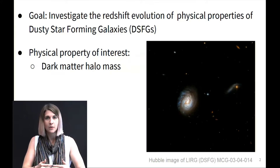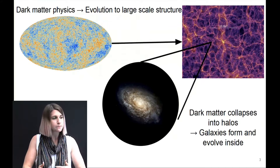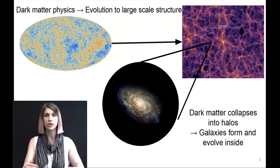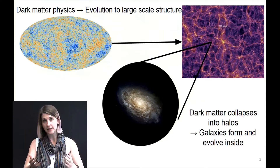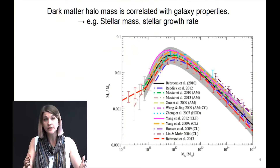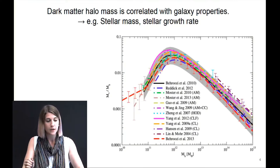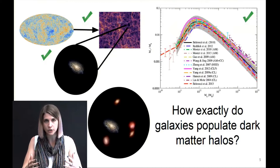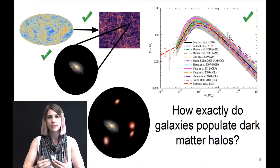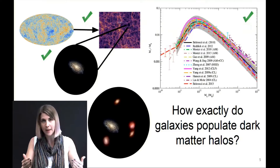Within Lambda CDM, which is a cosmological framework for the universe, dark matter physics is considered to be known. Therefore, the evolution of large-scale structure of the universe is also known for dark matter. In this theory, dark matter collapses into spherical halos inside of which galaxies form. The dark matter halo mass correlates with other physical properties of the galaxies, such as their stellar mass or stellar growth rate. The dark matter physics is known, the correlation with physical properties is known, but one question we still haven't figured out is how exactly galaxies populate dark matter halos — that is, a particular type of galaxy may inhabit dark matter halos of particular masses as a function of cosmic time. That is the question we're aiming to answer in this research.